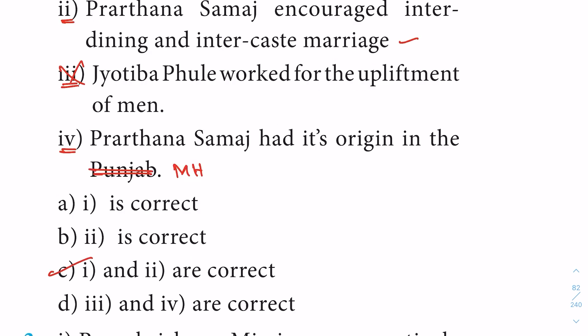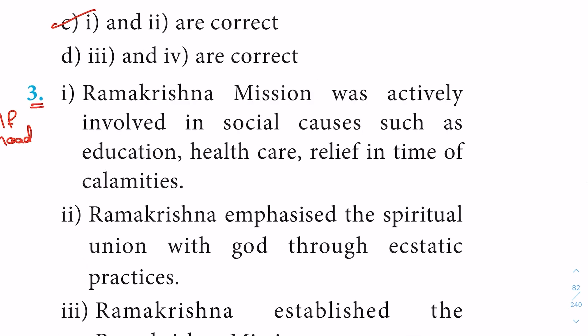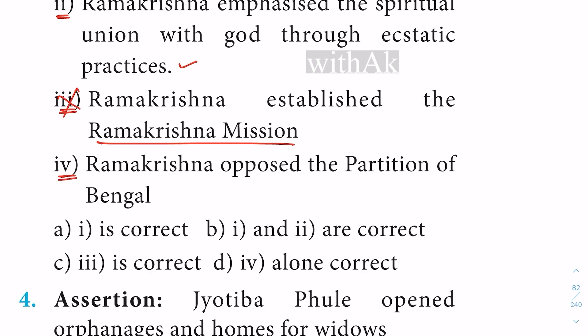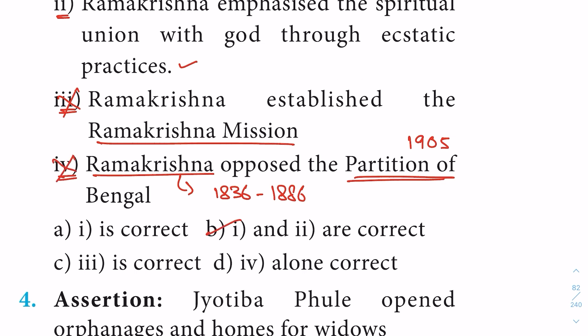Question 3: Statement 1 — Ramakrishna Mission was actively involved in social causes such as education, healthcare, and relief in times of calamities — correct. Statement 2 — Ramakrishna emphasized the spiritual union with God through ecstatic practices — correct. Statement 3 — Ramakrishna established the Ramakrishna Mission — wrong, it was established by Swami Vivekananda. Statement 4 — Ramakrishna opposed the Partition of Bengal — wrong, as Ramakrishna lived from 1836 to 1886 and the partition was in 1905. Option B: statements 1 and 2 are correct.